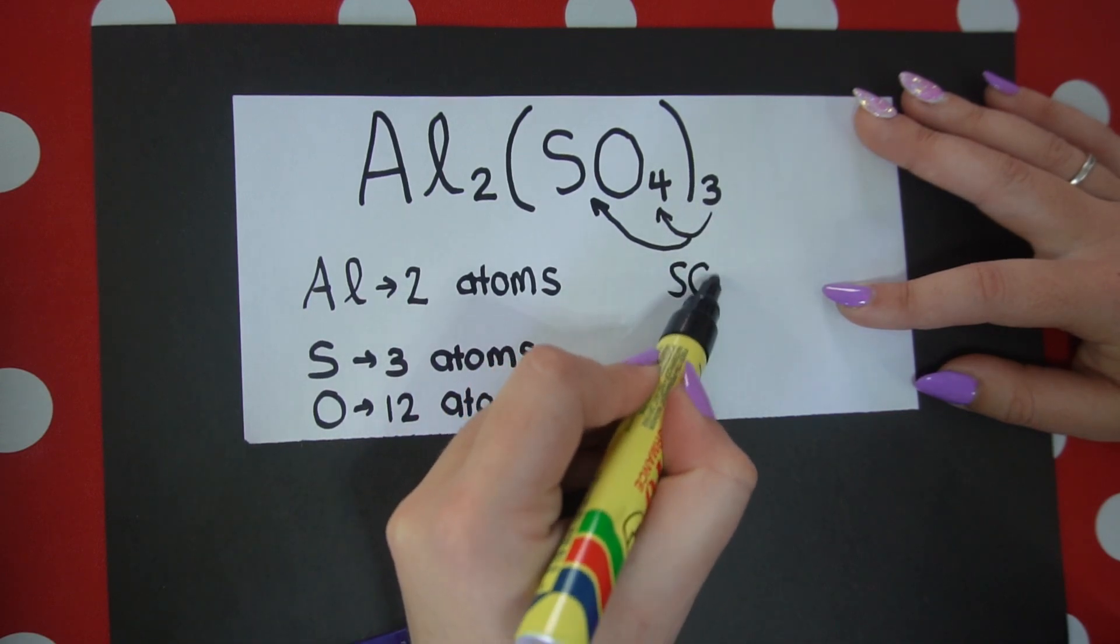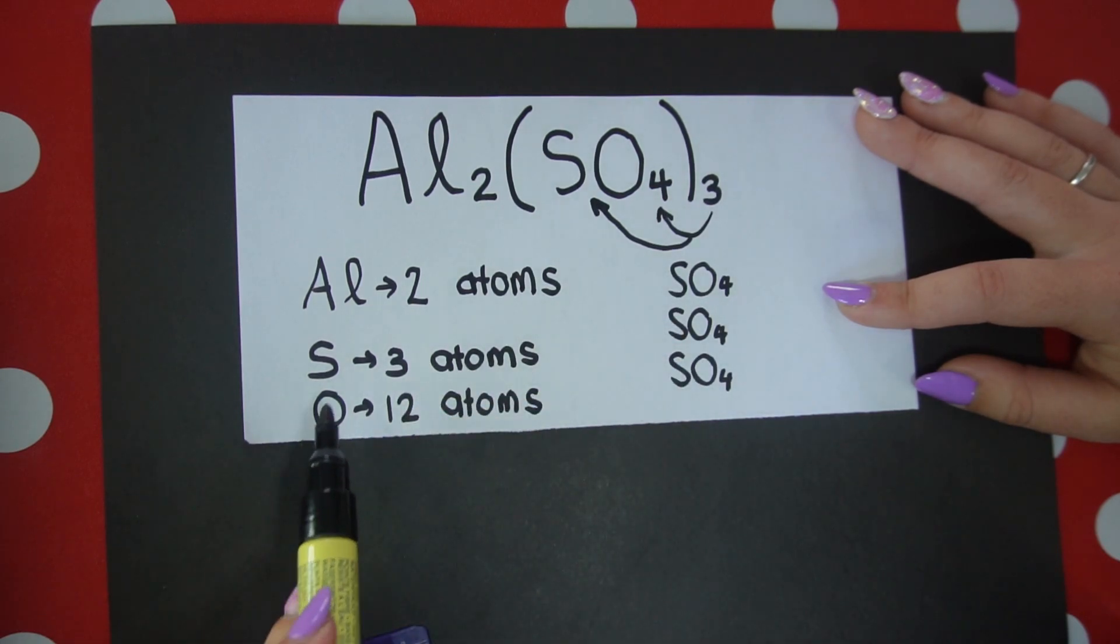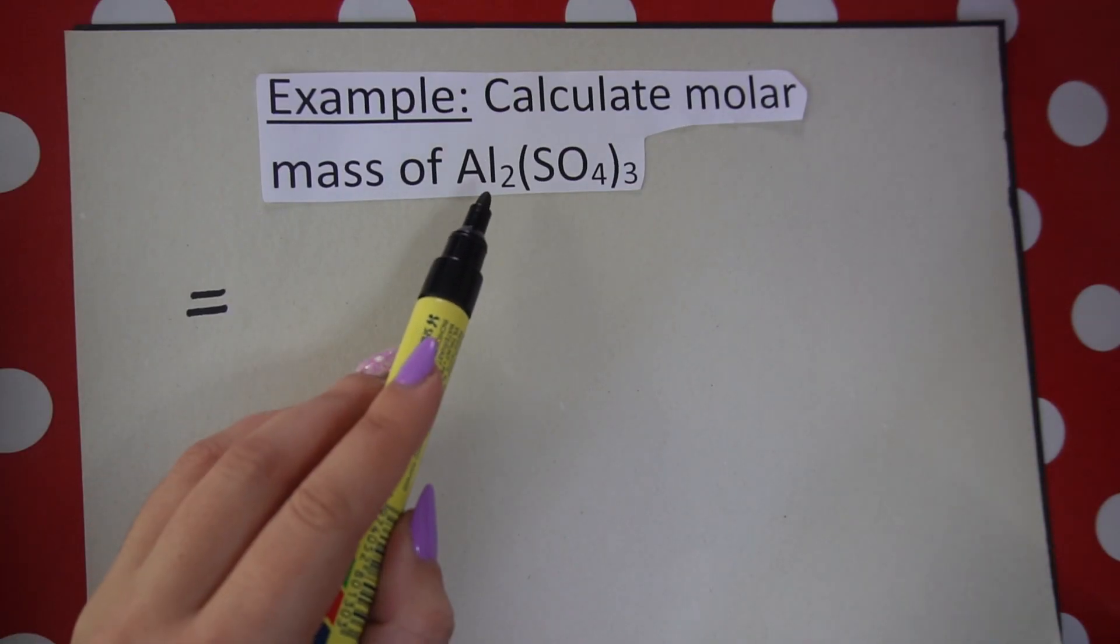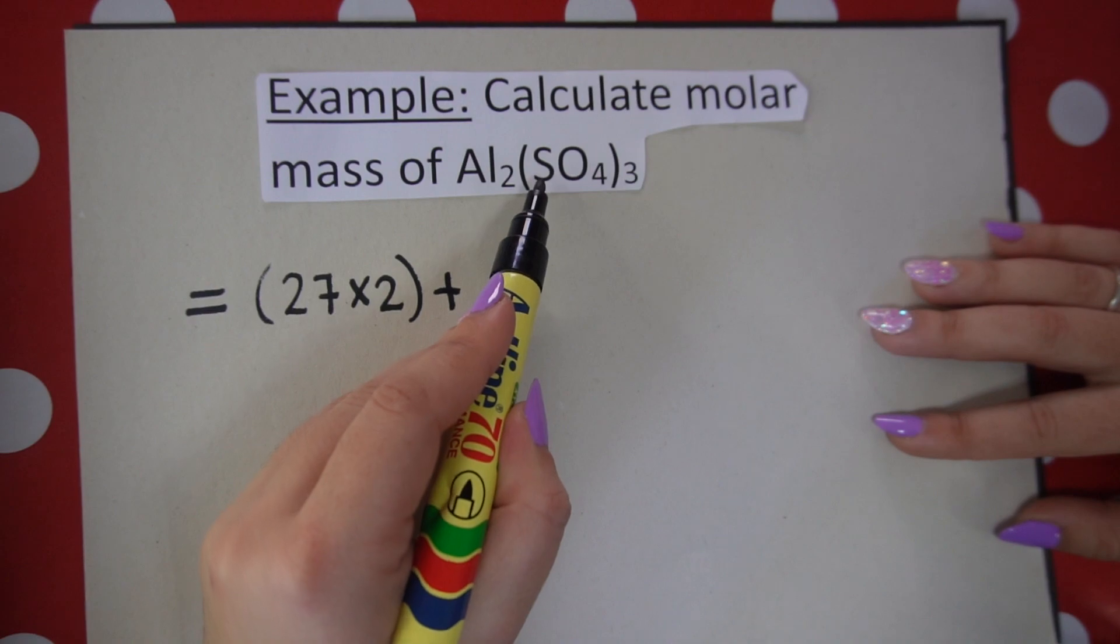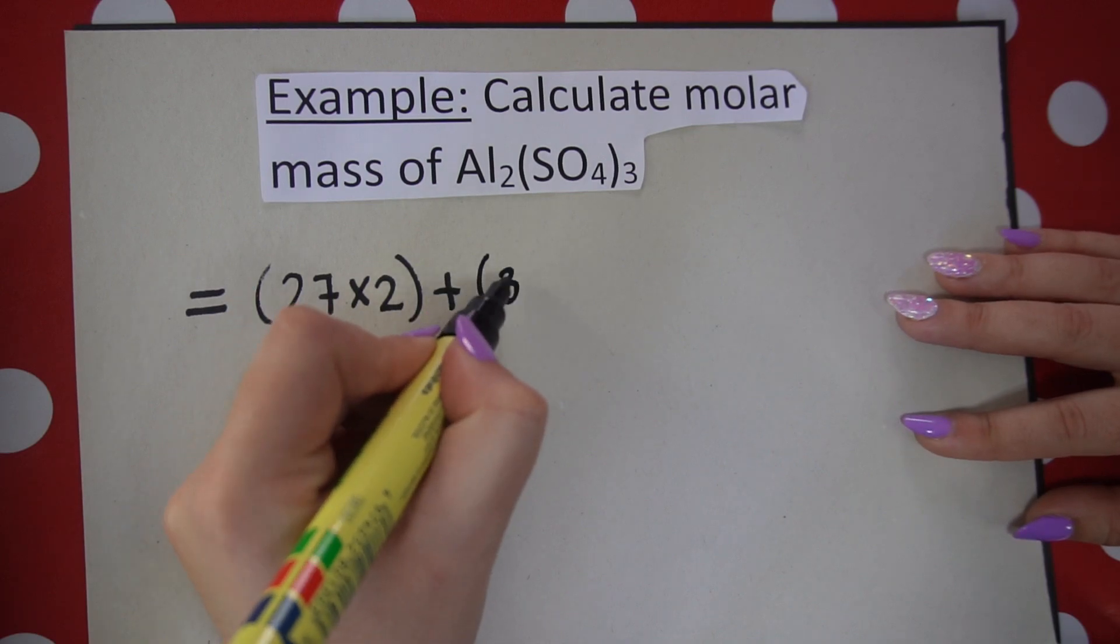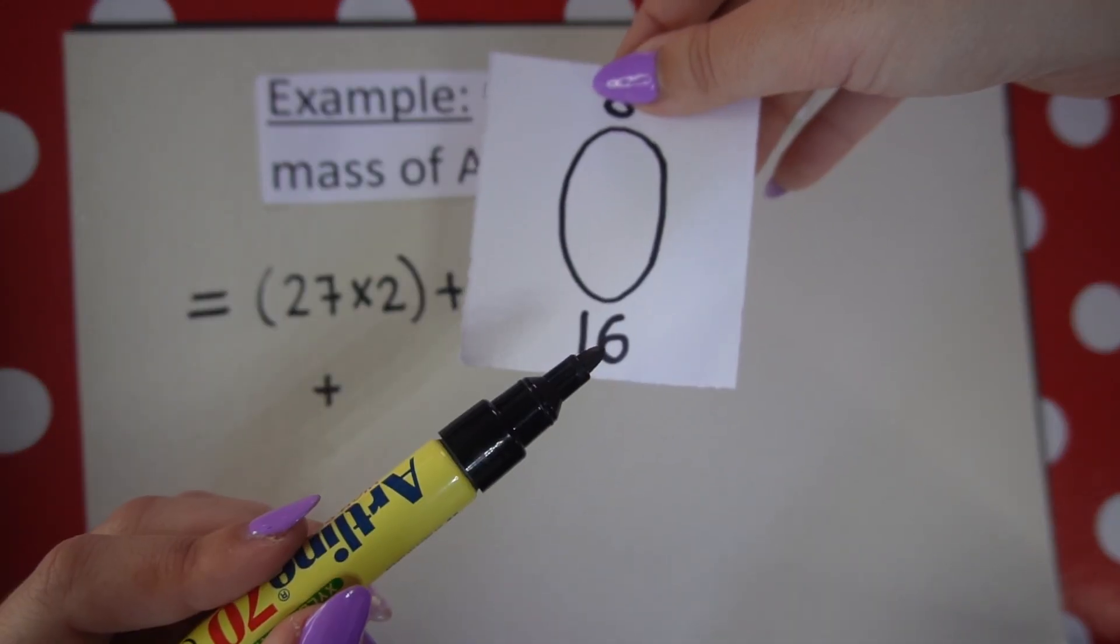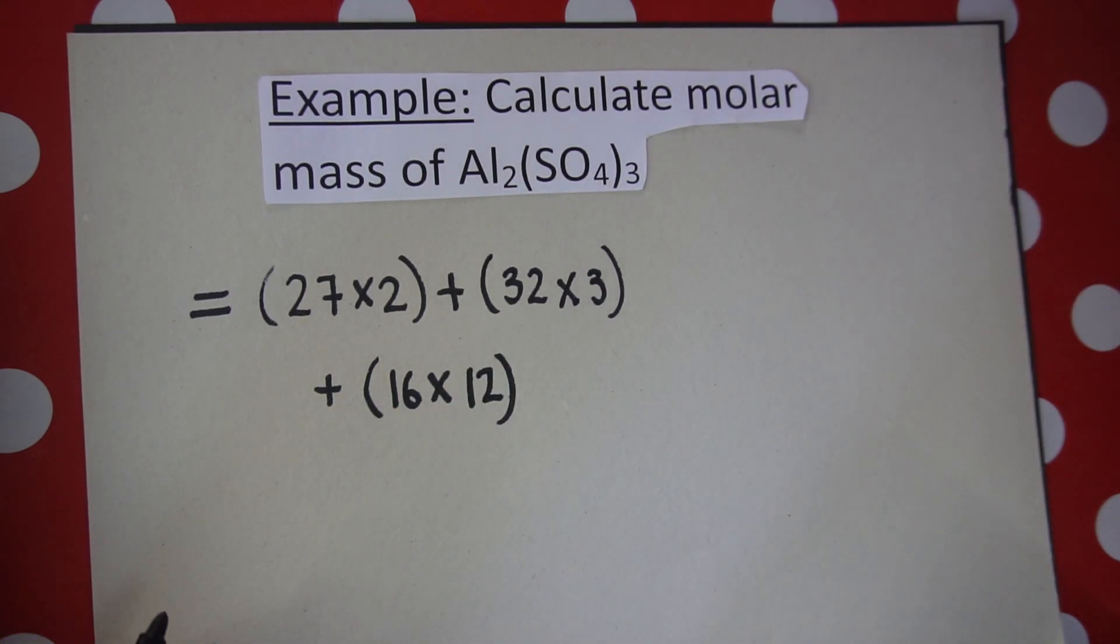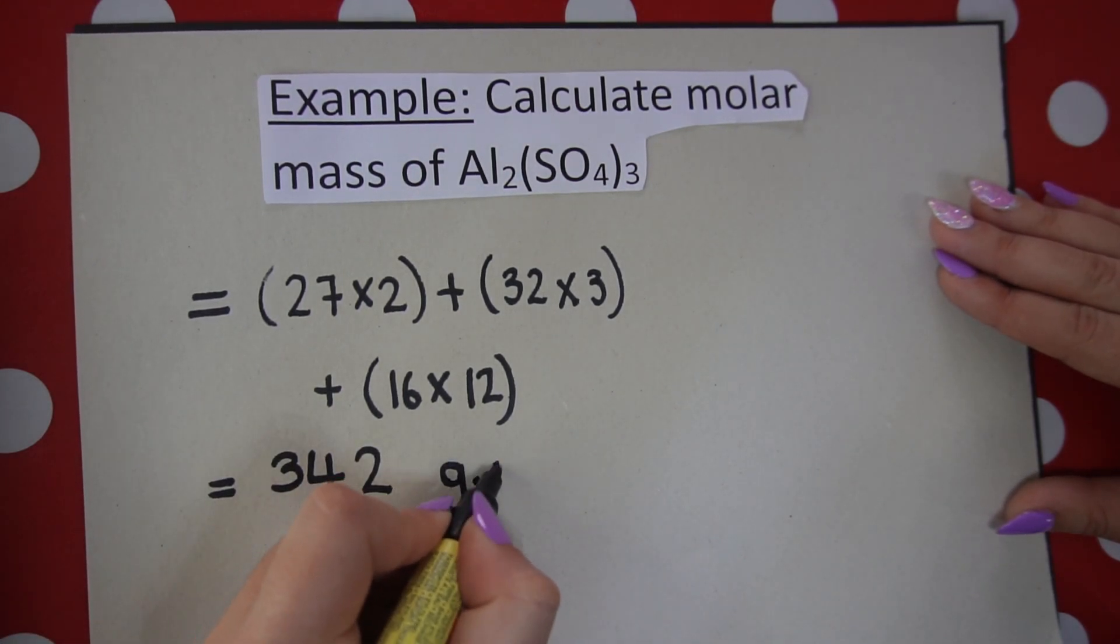Just remember what this bracket means—the SO4 with the three outside. It means we have an SO4 and another SO4 and another SO4. So one, two, three sulfurs, and four, eight, twelve oxygens. We have aluminum, which is 27, and we're going to multiply that by two plus sulfur. Remember we have three sulfurs, 32. So we're going to say 32 times three plus oxygen, which is 16. I'm going to times that by 12 because remember four times three is 12. And we're going to get 342 grams per mole.